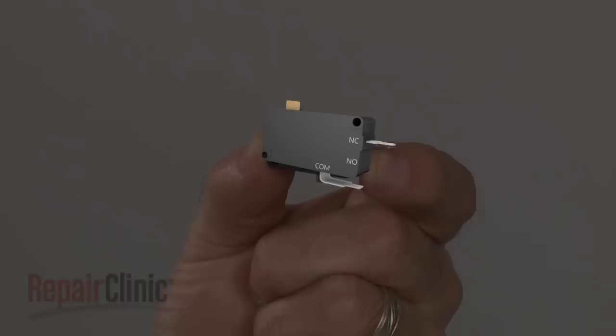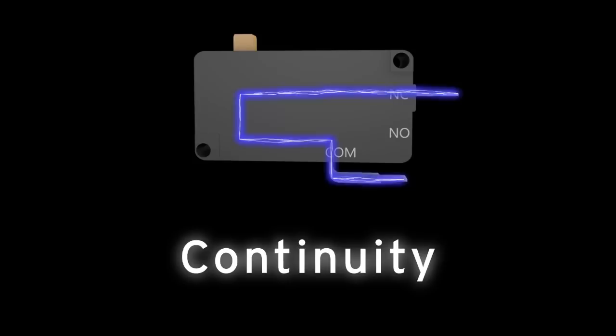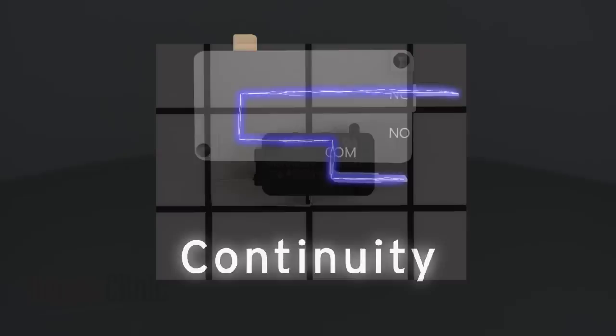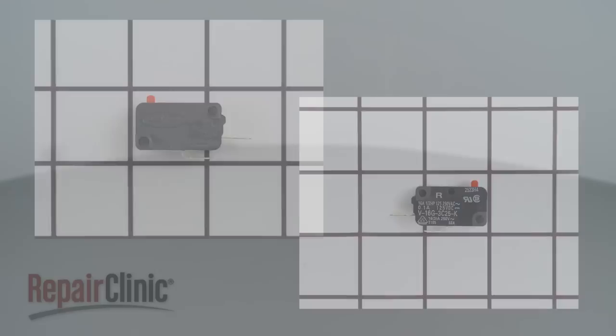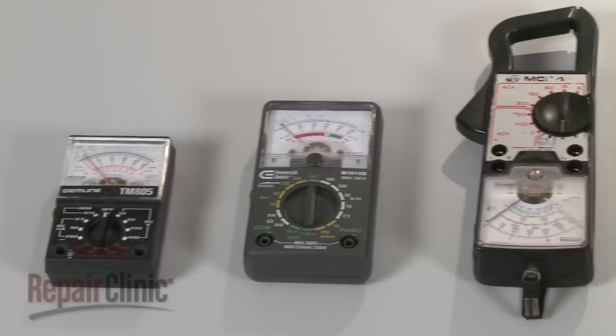If you suspect that a microwave switch has failed, you can test the switch for continuity. A continuity test will determine if a continuous electrical path is present in the switch. Switches come in many shapes and sizes, but all of them can be tested for continuity.